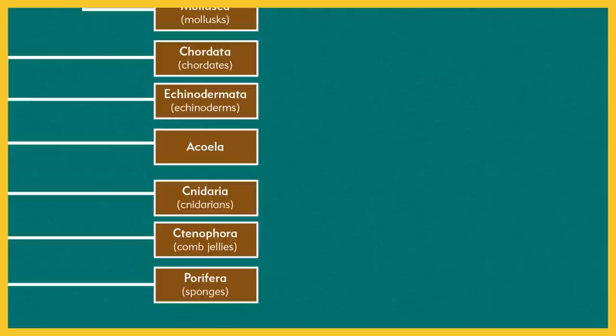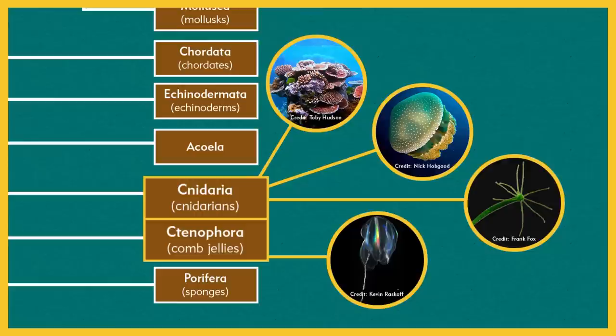Let's check out some invertebrates with radial symmetry. These include the cnidarians and ctenophores — the silent C stands for cool, because who doesn't love jellyfish? Cnidarians include corals, jellies, and hydras, and ctenophores include comb jellies. Each of these groups have true tissues, but radial symmetry.